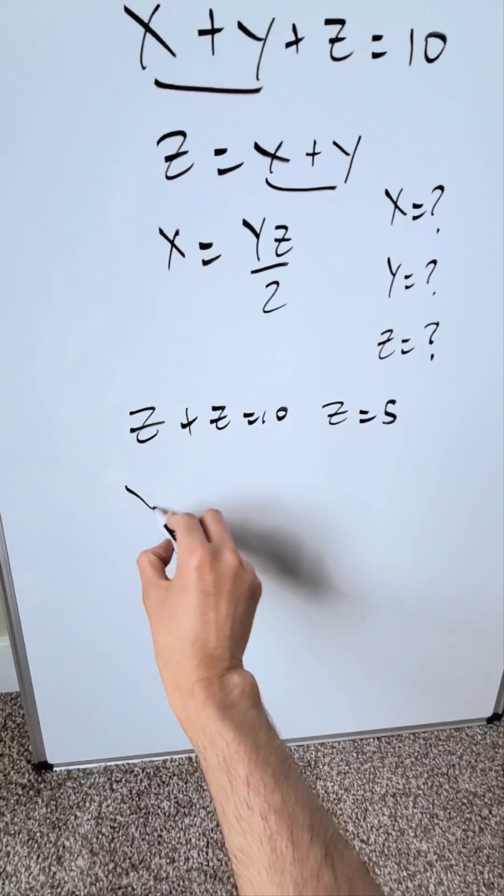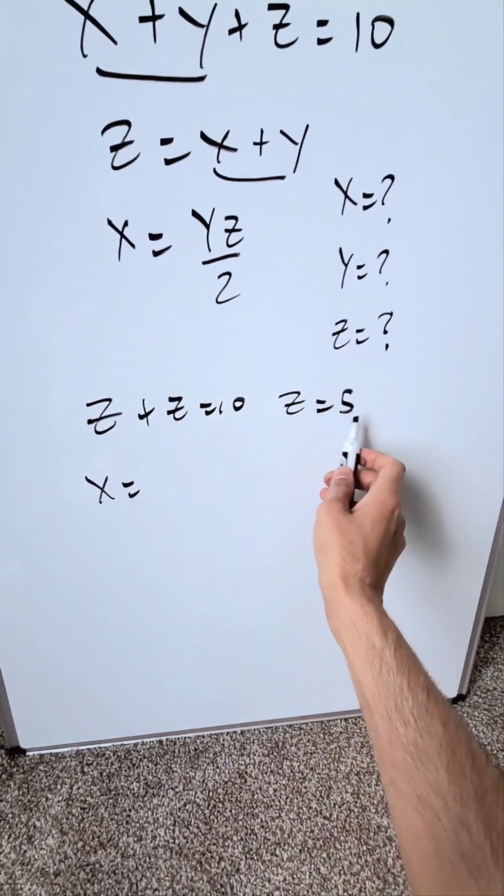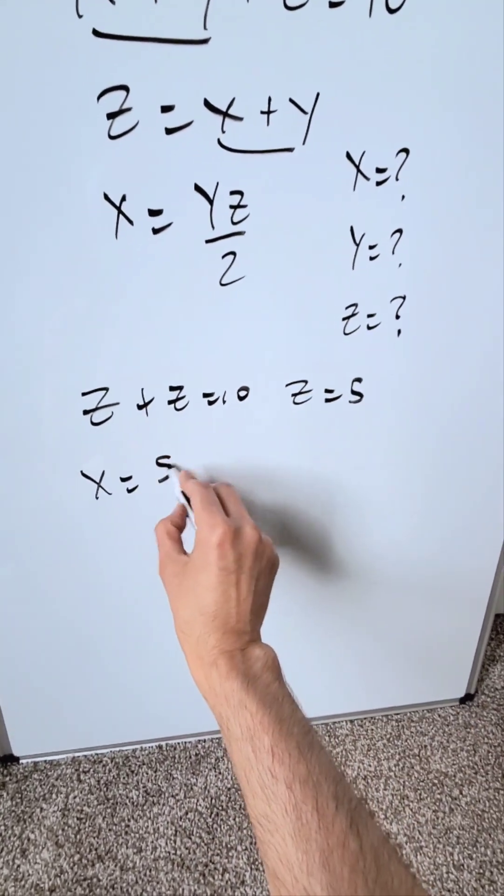Now focus right here. x here is equal to yz over 2, and I know z is 5, so I'll say 5y over 2.